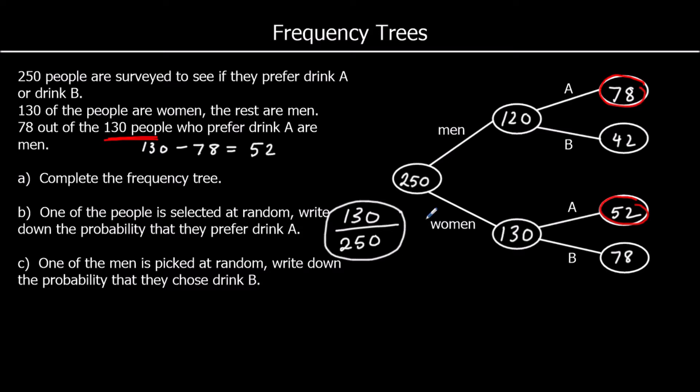One of the men is picked at random. Write down the probability they chose Drink B. So how many men were there? There were 120, so it's out of 120. How many men chose Drink B? 42. So we've got 42 out of 120. And again, we don't have to simplify it.